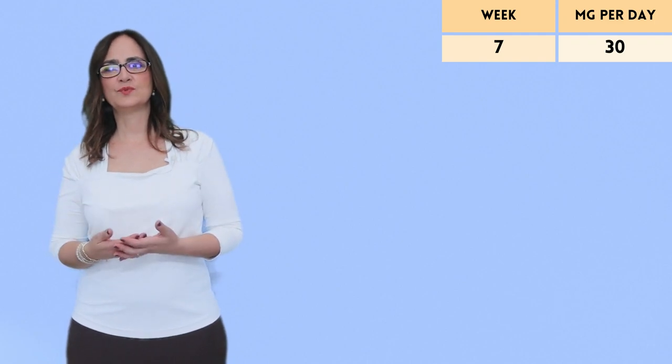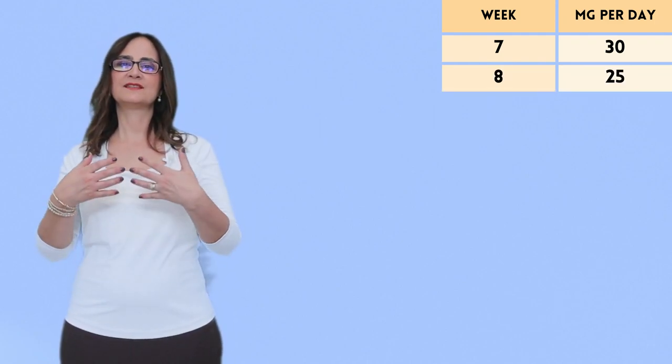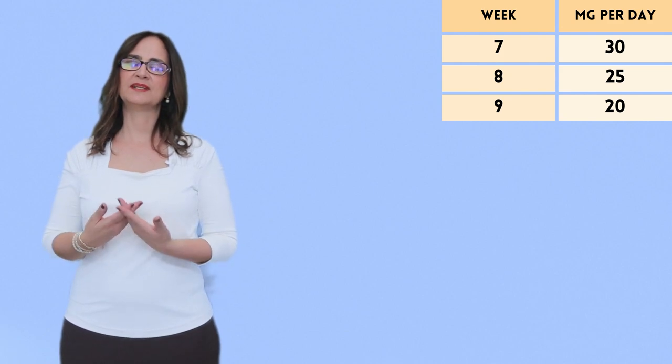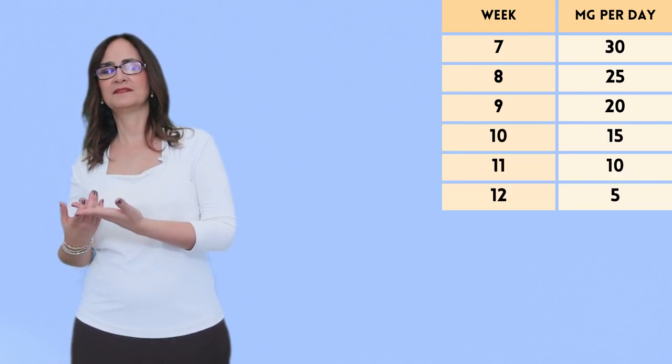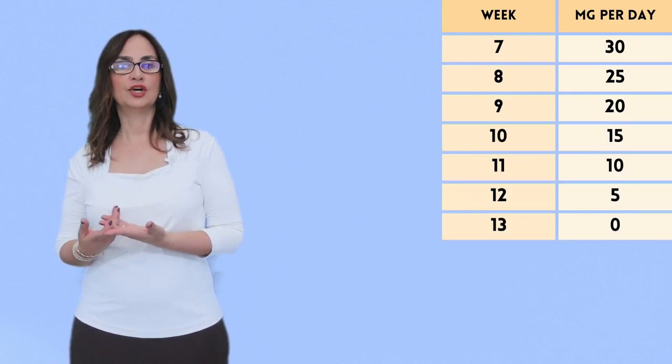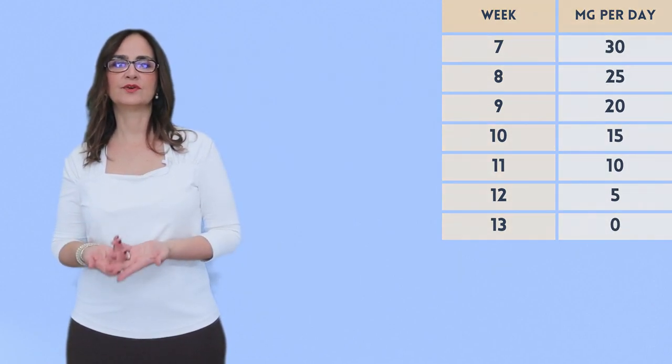So, the next dose reduction will be 25mg per day, and the next week they take 20mg per day, then 15, 10, 5, and keep going until they are not taking any opioids, or they reach a point where they do not tolerate any reduction in the daily dose.